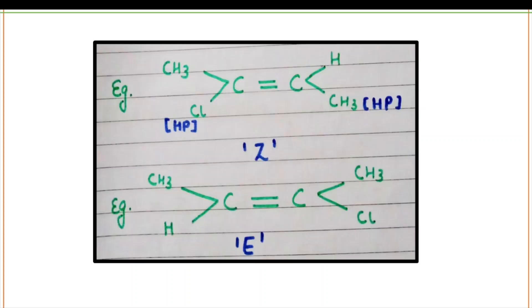Now an example. In example 1, the higher priority group is chlorine because chlorine has the maximum atomic number compared to carbon. Both the higher priority groups are attached to the carbon atom from the same side, which means this system is your Z system. When the two higher priority groups are attached from opposite sides, then this system will be your E system.